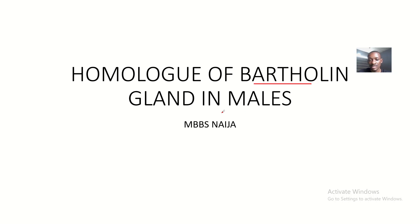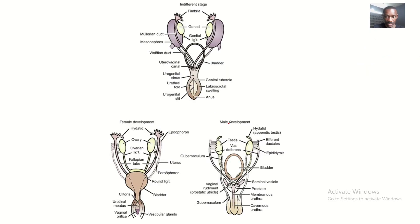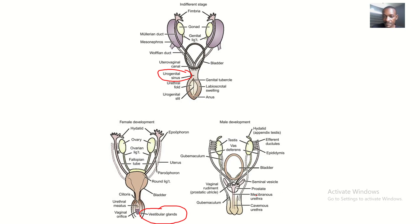So what is the homologue of Bartholin's gland in males? Bartholin's gland is found in females. They brought this picture and I'd like you guys to see the urogenital sinus where the Bartholin's glands develop from. You can see the vestibular glands, also known as the Bartholin's glands — they develop from there.